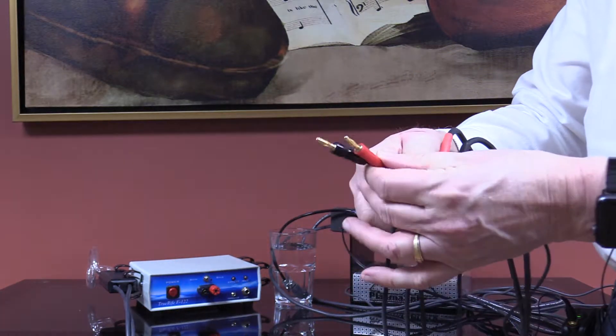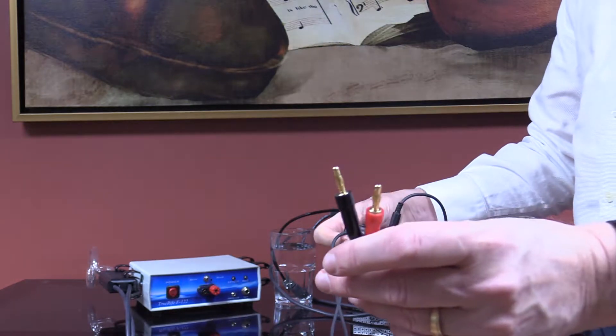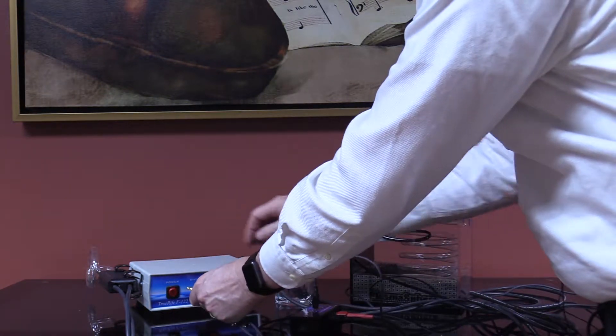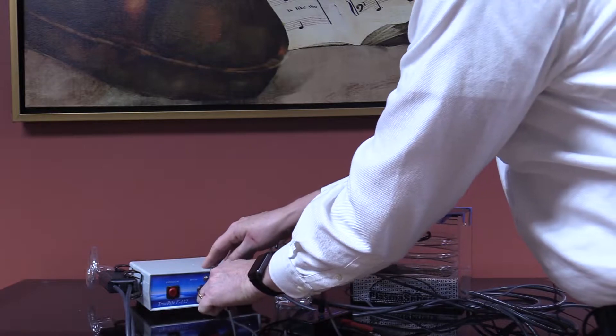And then these are the two lines coming out of the ozone amp right here, and they simply now plug into the F-122.